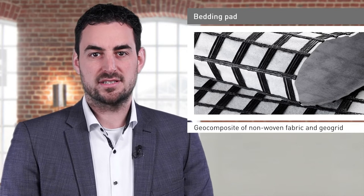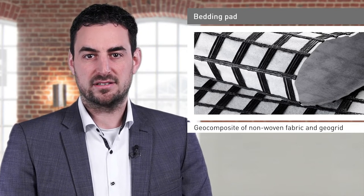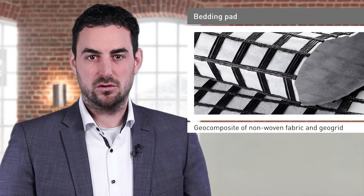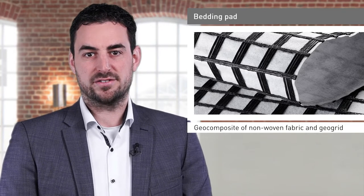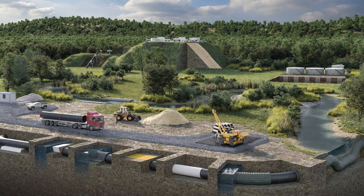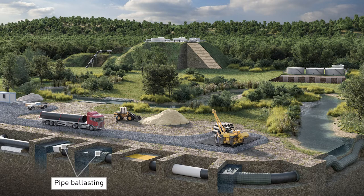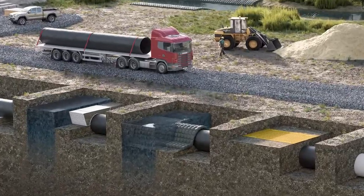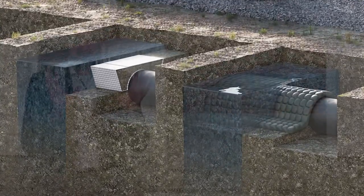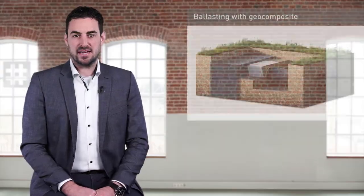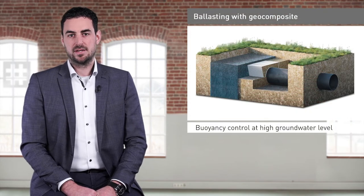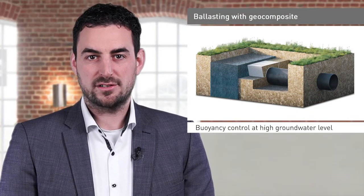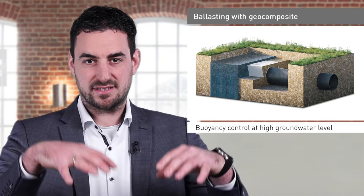We will learn more about the advantages of a composite in the following application, in which I would like to introduce the solutions for ballasting and buoyancy control. Pipelines often run through areas with a high groundwater level and frequently cross bodies of water. In these situations the pipeline needs to be protected against buoyancy. In order to secure pipelines against buoyancy, they must be kept stable in position in the pipe trench by taking appropriate measures. The uplift protection of pipelines is usually achieved by ballasting.